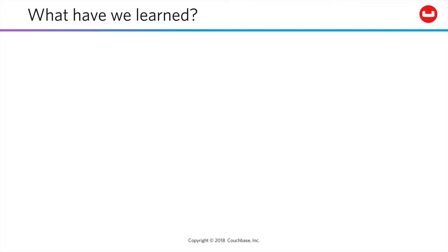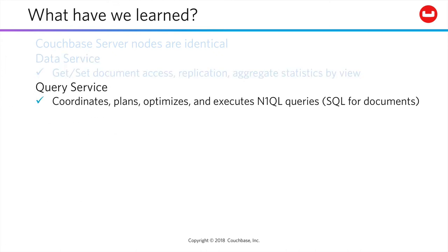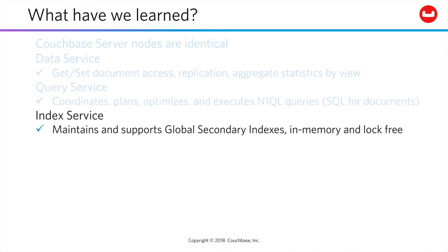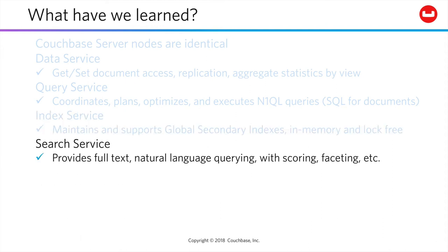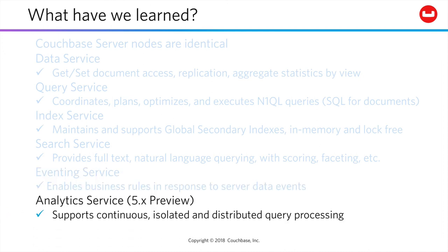So, what have we learned? Couchbase nodes are identical, and are clustered with carrier-grade performance. The data service exposes individual document operations, along with replication and aggregation. The query service keeps your team's SQL skills directly relevant, while extending them with the power and flexibility of JSON. The index service provides fast, powerful, in-memory indexing your queries demand. The search service gives you natural language query capabilities right in the database, so you don't have to pump text all over your data center just to support a search box. The eventing service enables business rules in response to server data events. And the analytics service supports isolated, distributed, ongoing query processing.